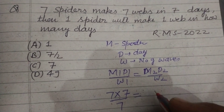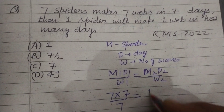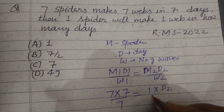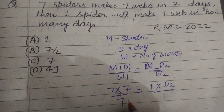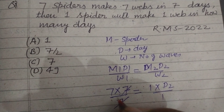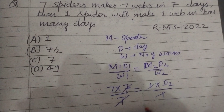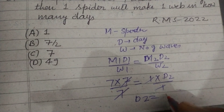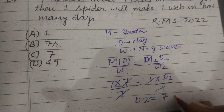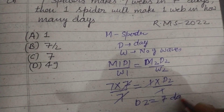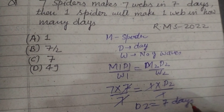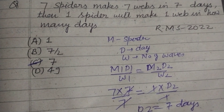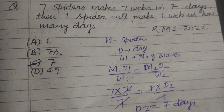In the second case, M2 is 1, D2 is required, and W2 is also 1. Simplifying this, we get D2 equal to 7 days. Therefore the answer to this question is found in option C, which is 7.